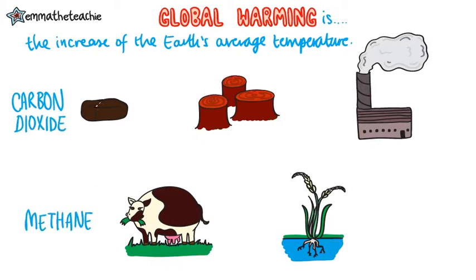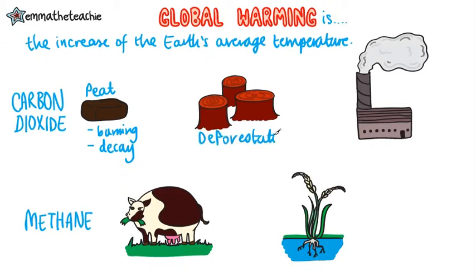In the previous video we learnt that the burning and decay of peat releases carbon dioxide. Deforestation also causes an increase in the levels of this gas. Burning fossil fuels is another huge contributor to these increasing levels.